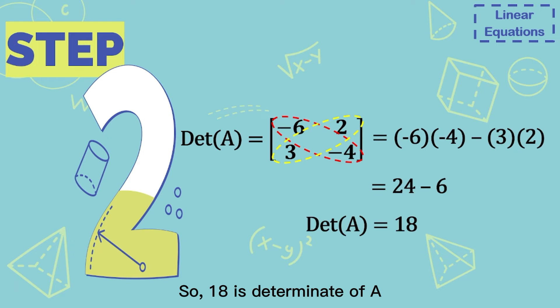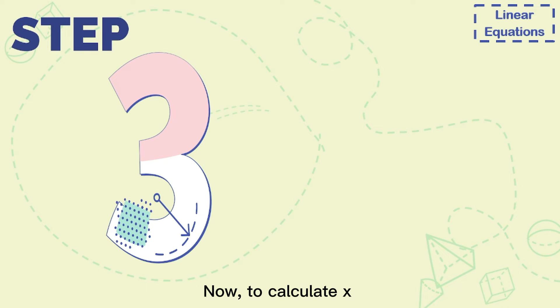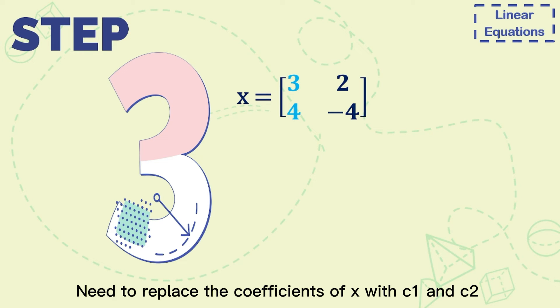So 18 is the determinant of d. Step 3: Now, to calculate x, here's the formula for x. So it's a 2x2 matrix. Need to replace the coefficient of x with c1 and c2.